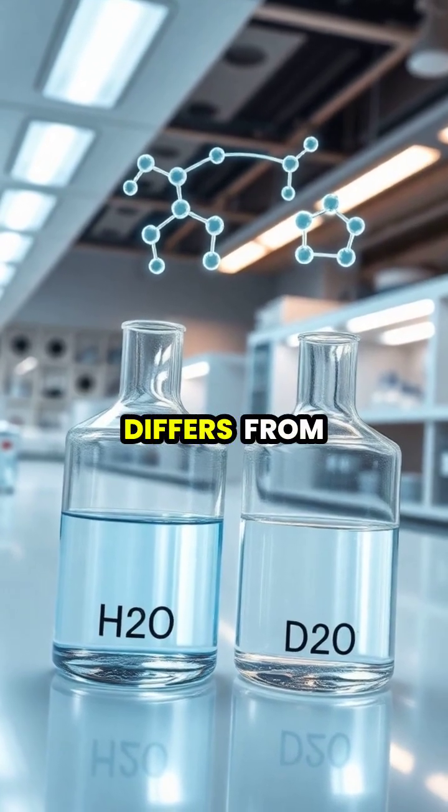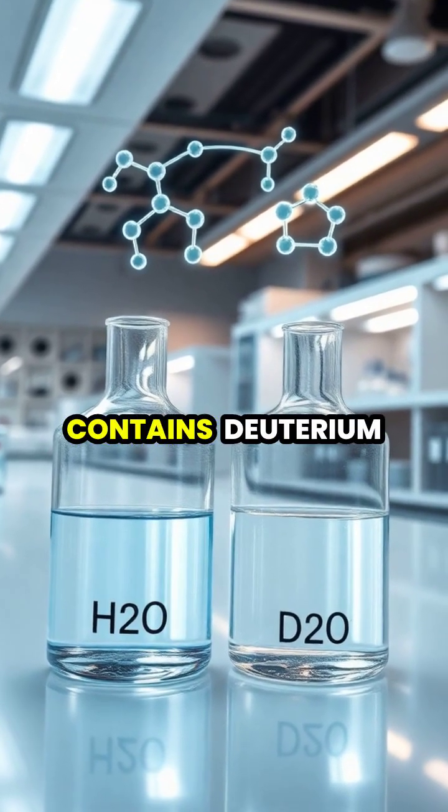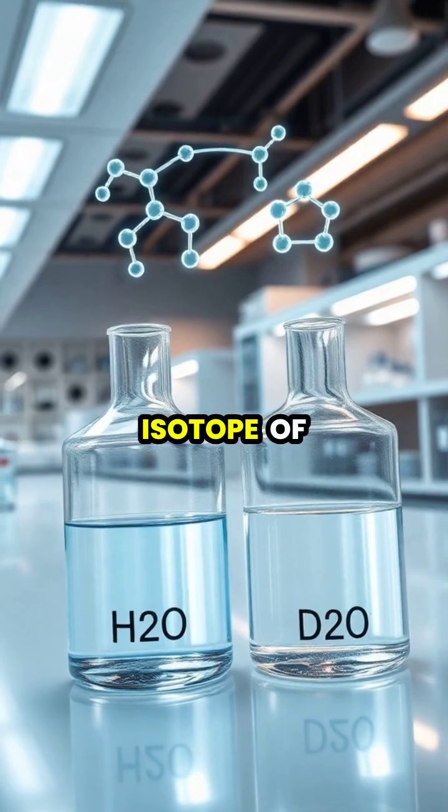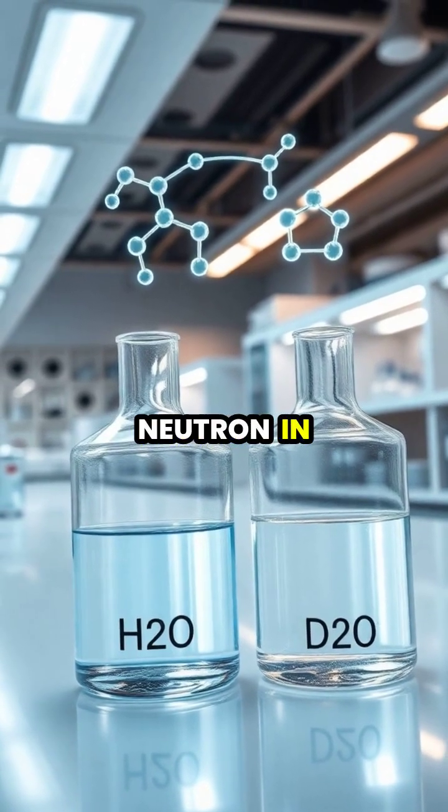Heavy water, or D2O, differs from regular water because it contains deuterium, a heavier isotope of hydrogen with an extra neutron in its nucleus.